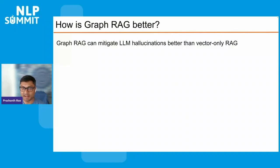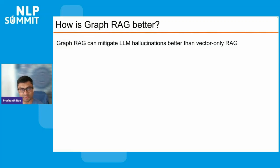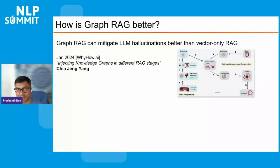It's worth asking how GraphRAG is better than conventional or vector-only RAG. The use of graphs in information retrieval is not a new concept — graphs have been used in information retrieval from the early days of recommender systems, such as those used by LinkedIn and Google. Graphs add value to RAG by providing factual information from connected entities in combination with vector similarity search. An insightful article from earlier this year by Chia from whyhow.ai describes how graphs can offer value in different stages of the RAG pipeline, and it's important to realize that there are many different ways to implement GraphRAG — the graph can be injected at various stages in the pipeline.